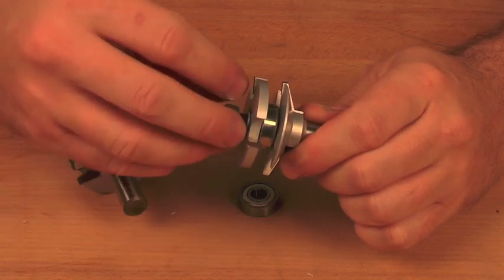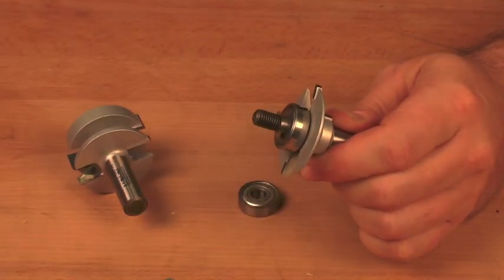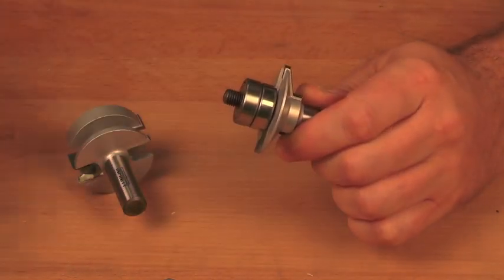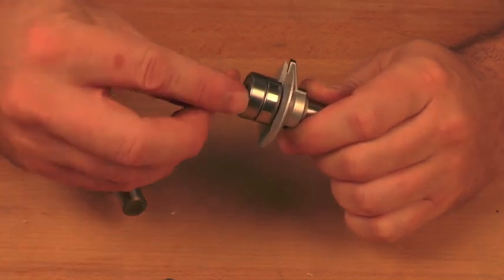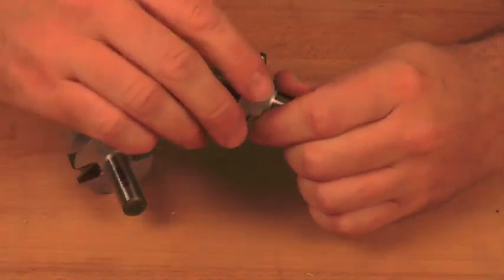And for the coping bit, again remove the nut, slot cutter and washers. This time you can leave the thin shims on, add the bearing that came with the accessory kit, washer and a nut again, and tighten down.